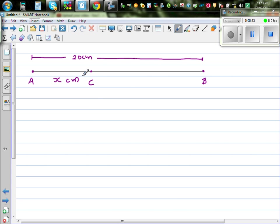So if this is X centimeters, what is the length from B to C? Well, if the length from A to B is 20, and the length from A to C is X centimeters, the length of B to C or C to B would be 20 minus X. Ok, so I hope you understand this.